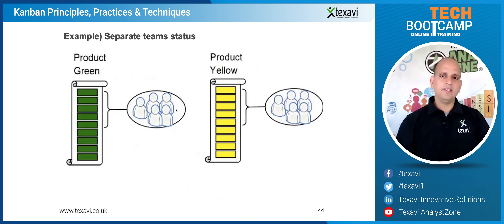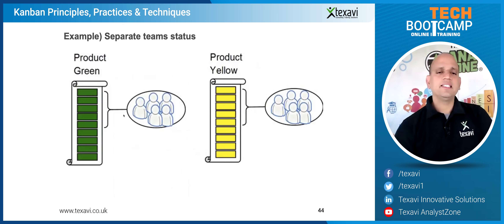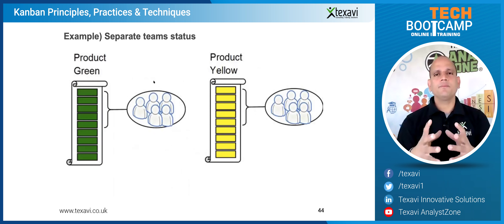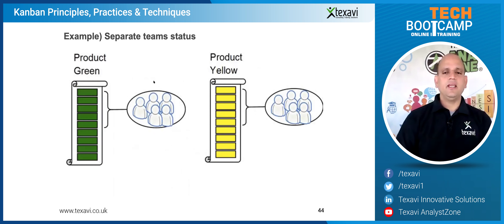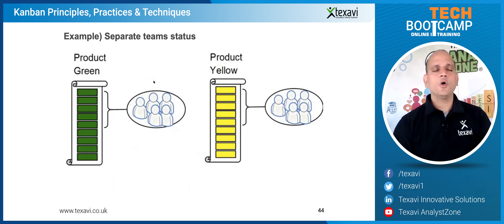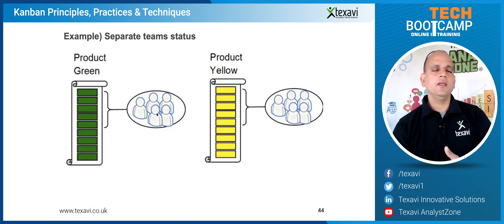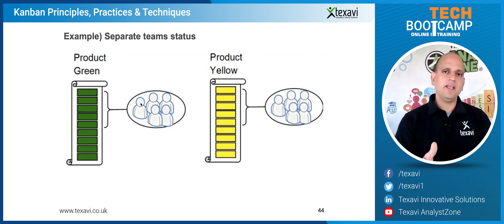Here's an example: if you have two teams in your organization, both working on the same product. The core product has a front-end, which is the presentation layer, and this team is working on Angular, JavaScript, and React.js — that's the technology stack they are working on.